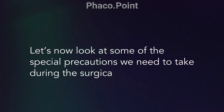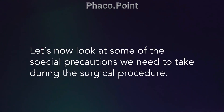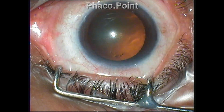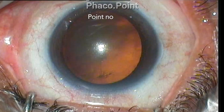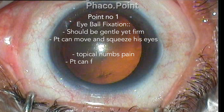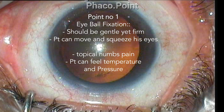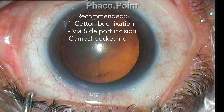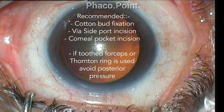Now let's look at some special precautions during the surgical procedure itself. Pointer number one: you need to get good eyeball fixation — gentle yet firm. Remember that patients can move and squeeze their eyes. While topical anesthesia numbs pain, the patient will still feel temperature and pressure. You can use either a cotton bud, fixation via a side port instrument, or a corneal pocket incision, which was pioneered by me.